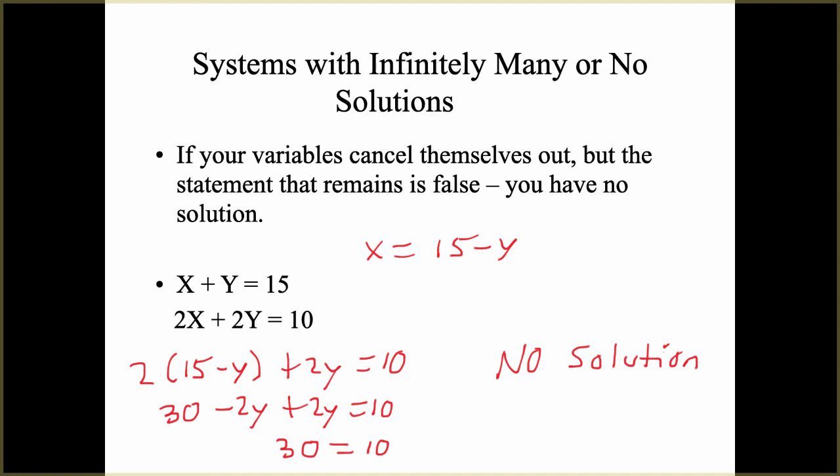So when we do substitution, just like with graphing, we can get infinitely many solutions if it's the same line or no solution, which means they're parallel lines. So if your variables go away and it's true, infinite solutions. Variable goes away, and it's false, no solution.